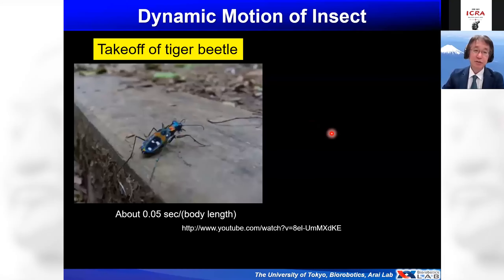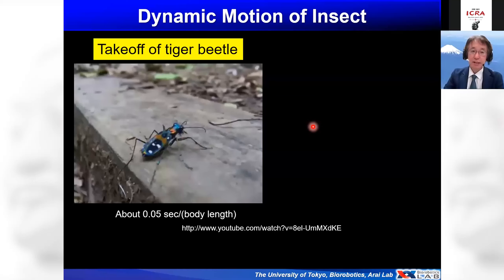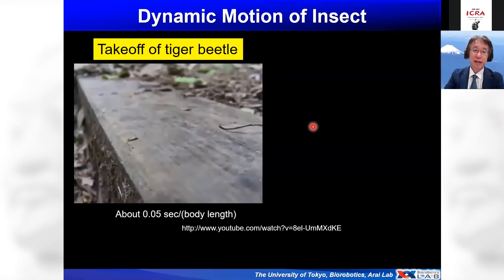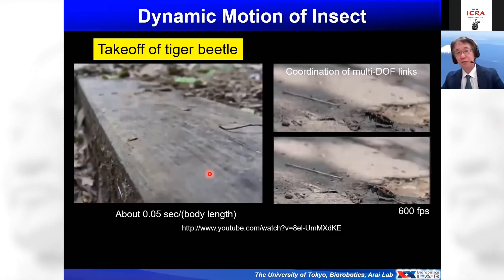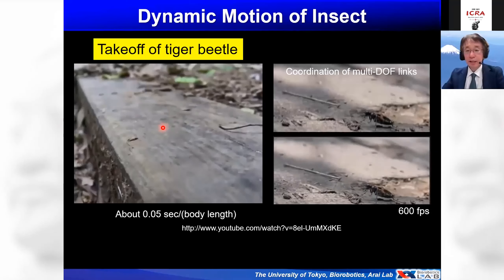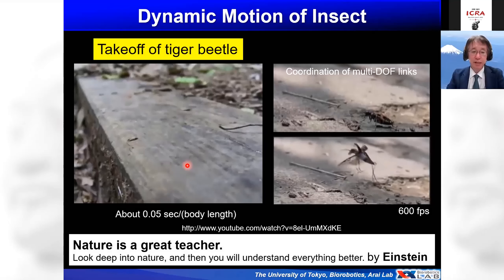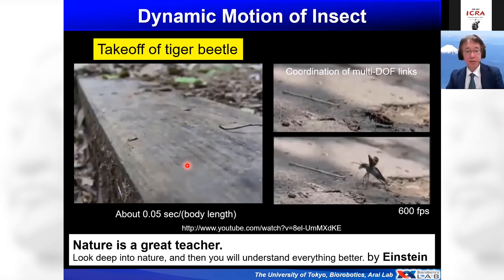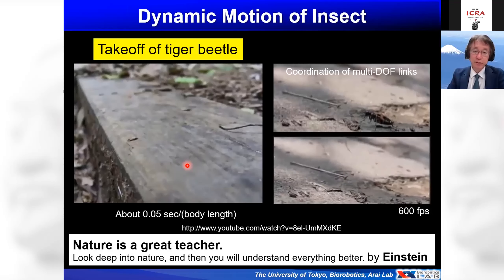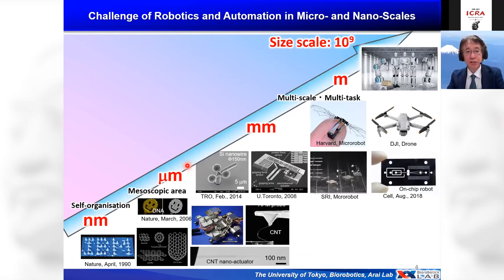Let me start from the dynamic motion of insects. I will show you a short video — this is the takeoff of a tiger beetle. I will show you the slow motion here. This kind of takeoff is realized by the coordination of multi-degrees-of-freedom links. Looking at such videos, nature is a great teacher. However, it is still very difficult to realize such a small micro robot.